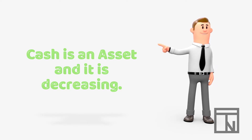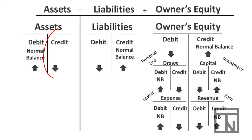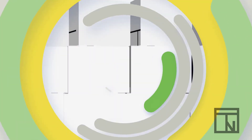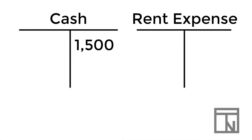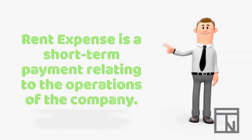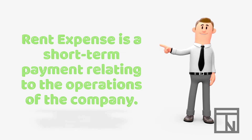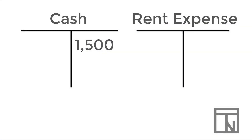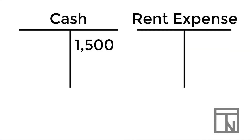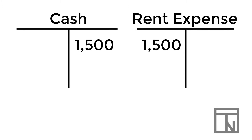We are paying cash, so it is decreasing. Looking at our debits and credits worksheet, when assets decrease that makes them a credit. So let's record the $1,500 decrease in cash on the right or credit side of our T-account. Now let's look at rent expense. Rent expense is a short-term payment that relates to operations, so rent expense would go in the expense category. We are increasing our expenses, so looking at the worksheet, expenses increase with a debit. So let's record the $1,500 increase to rent expense on the left or debit side of the T-account.